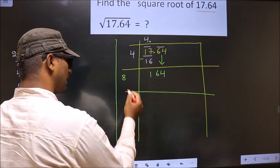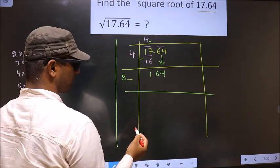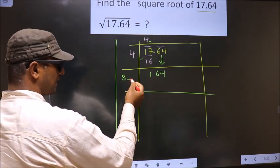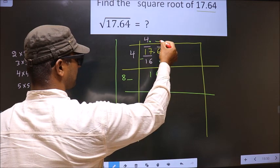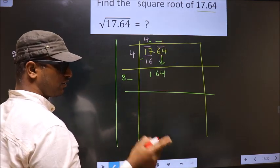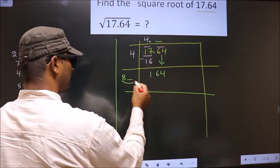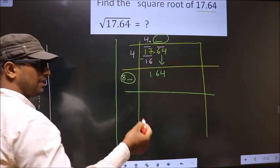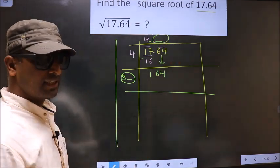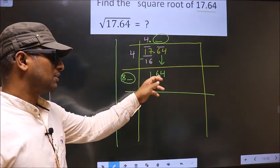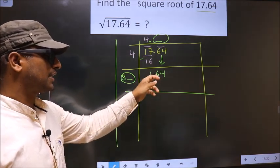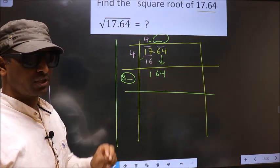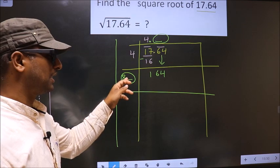Next. Now I should write a number here. Condition is whatever number I write here, here also I should write the same number. And also when you multiply this number and this number, then the resulting number should be either equal to this or smaller than this, but should not be larger than this number. So let us find the number here.